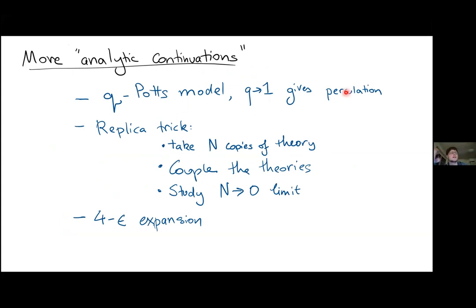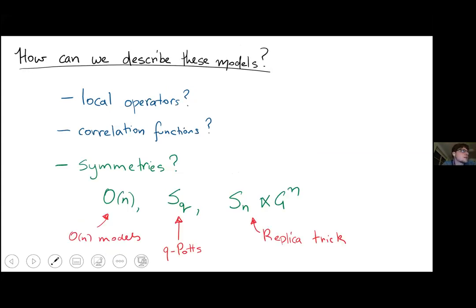Another example, which I won't discuss much, is dimensional regularization and the four-minus-epsilon expansion — here we're taking the spacetime symmetry to be fractional rather than a global symmetry. In all of these cases it's very unclear, at least naively, what these models are and whether they make any sense: what are local operators if you have O(N) symmetry with N not an integer? What are the correlation functions?